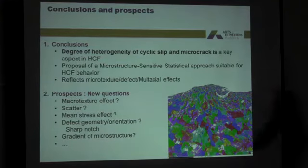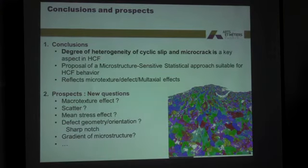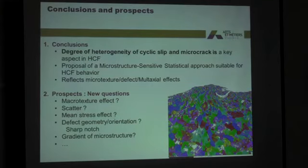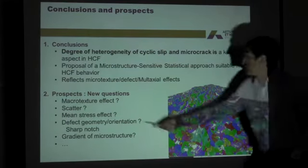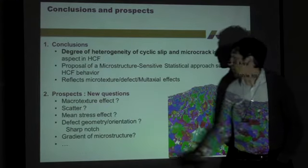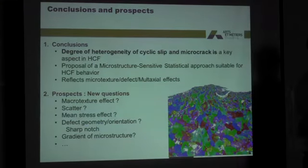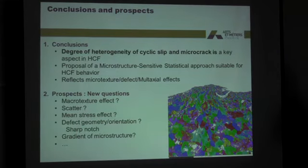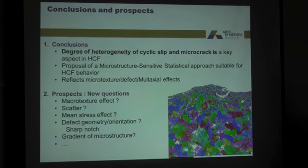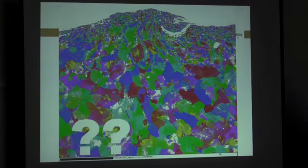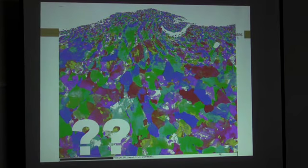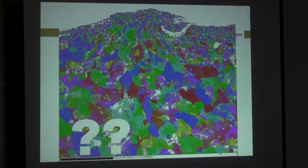But of course now we have a lot of questions open: the effect of macro-texture, the scatter, the mean stress effect, what happens if I change the geometry of the defect and its orientation? And, as you can see in this picture, how can I deal with gradients of microstructure? That's what we're doing. Thank you very much.